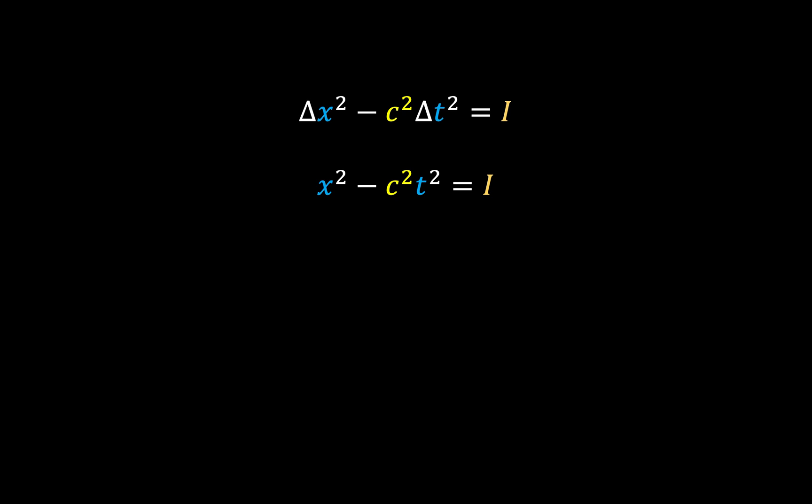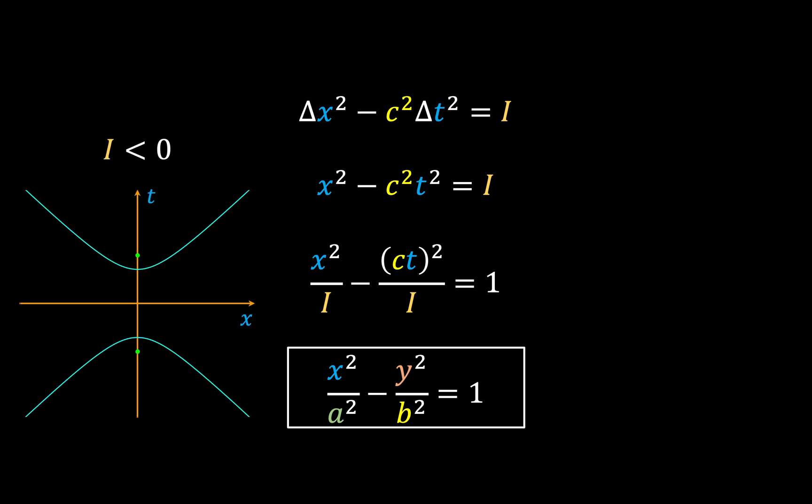Now it's possible to rephrase this as x squared divided by I minus ct squared divided by I equals 1, and some of you might recognize this as the standard equation for a hyperbola centered on the origin, where the hyperbola has a north-south opening if I is less than 0, and an east-west opening if I is greater than 0, with x on the x-axis and t on the y-axis.